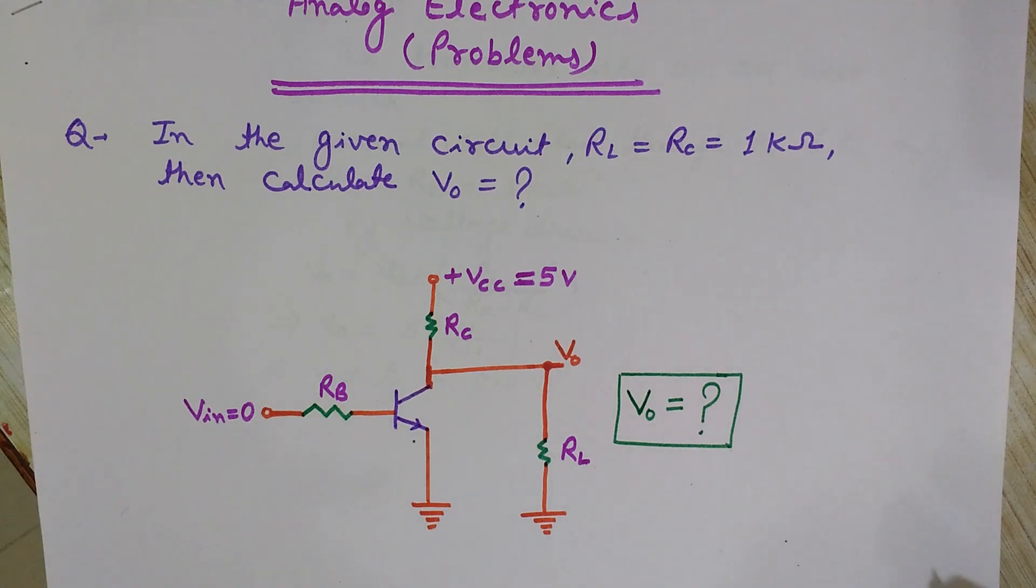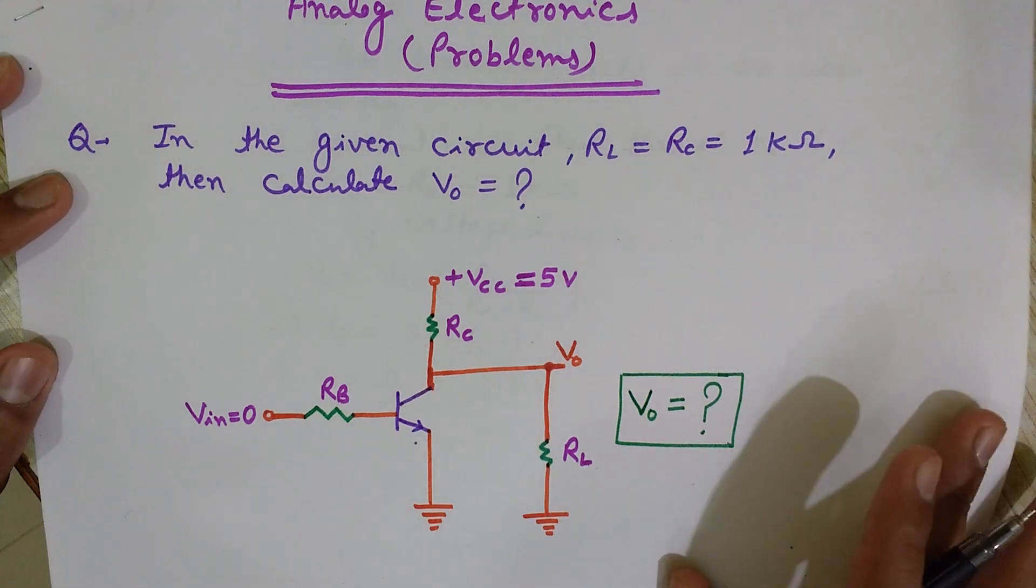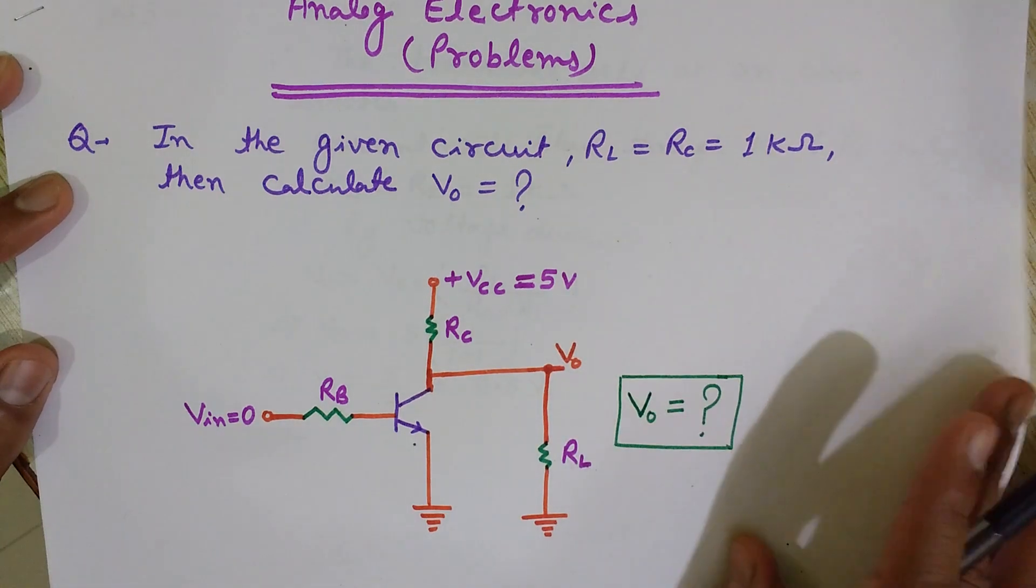So it's a very simple problem now. Here the current will follow this path and I want to calculate this V0, the voltage across this RL load resistor.